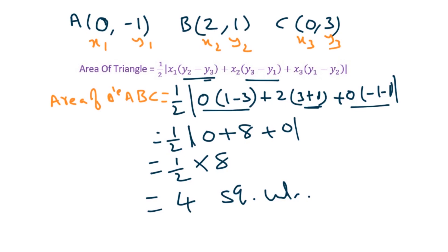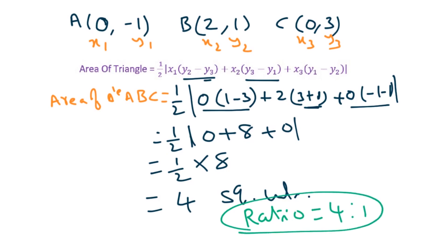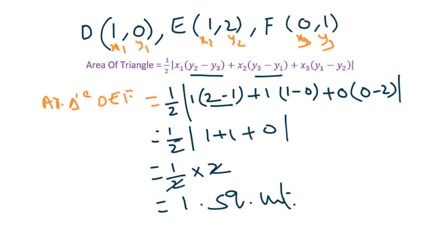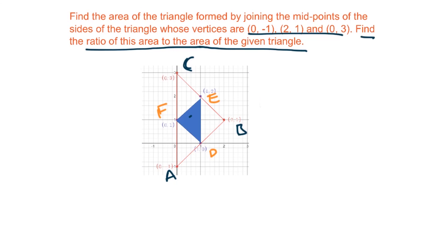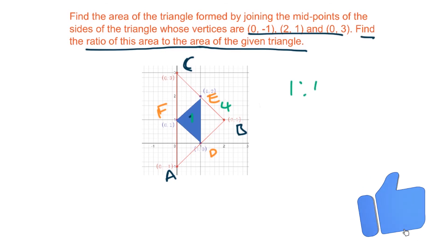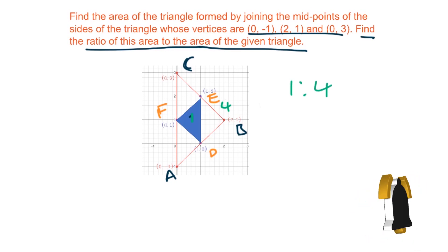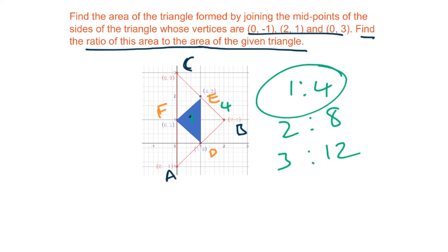So the ratio will be 4:1 — the area of the large triangle to the area of the small triangle formed by joining the midpoints. If the small triangle area is 1, the large is 4; if small is 2, large is 8; if small is 3, large is 12. The ratio is 1:4 (small to large).